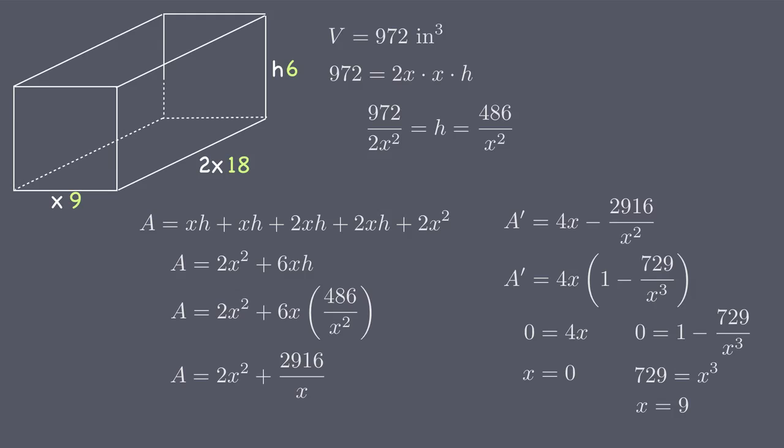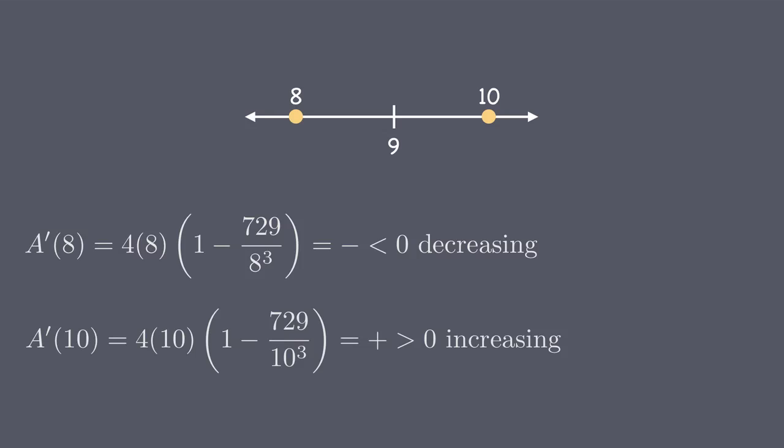To ensure that we've found the correct dimensions, we can confirm that x equals nine is in fact a local minimum of our function. Using the same process we used in the last example, we can plot x equals nine on our number line, then pick values on either side of it, like eight and ten. We'll plug eight into the first derivative of our optimization equation to find that it's negative. Then we'll plug ten into the first derivative of our optimization equation to find that it's positive. The negative, then positive pattern indicates that nine is a local minimum of the function, which means that a critical point of x equals nine and dimensions of nine by eighteen by six do in fact minimize the surface area.